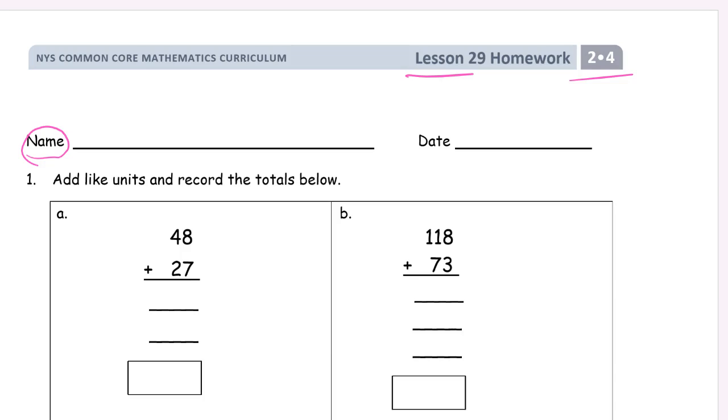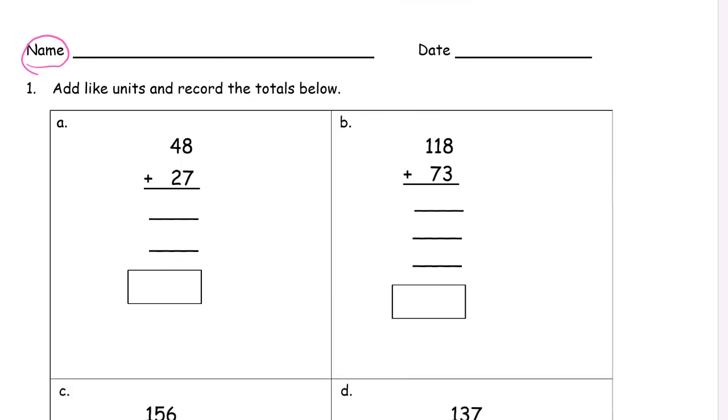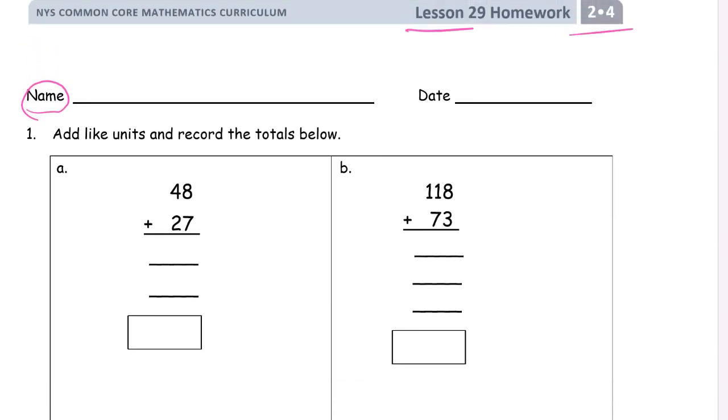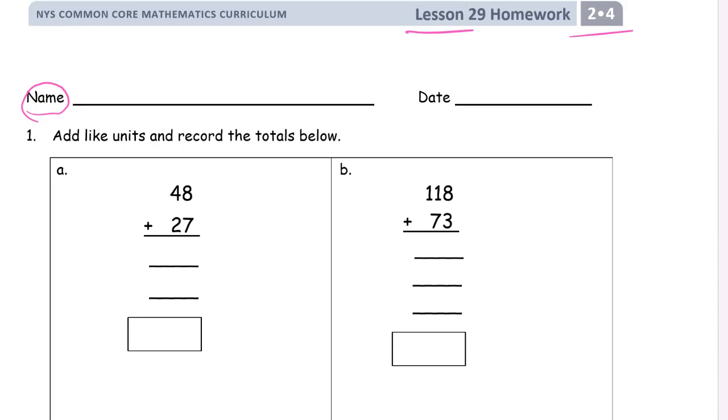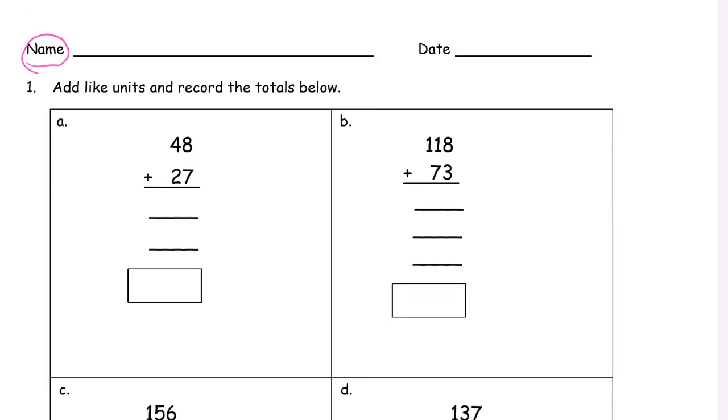We're using a vertical addition method called totals below. If you don't remember it from class, after you see a couple of examples you'll see it. A lot of second graders really like this method. It's okay to use it as much as you want.